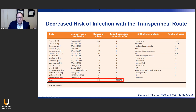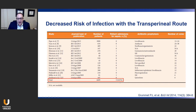What is known in the literature? In a review article by Grumet and coworkers published in the BJUI in 2014, the authors reviewed all available series on transperineal prostate biopsy. We know the risk with transrectal biopsy is roughly 5% to 7%. In this study, which included data from 6,609 patients, the authors found an infectious complication rate of less than 0.1% — specifically 0.076% — a markedly decreased risk with the transperineal approach.